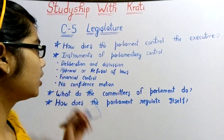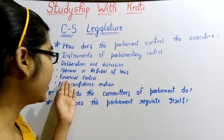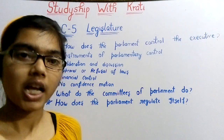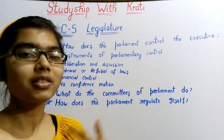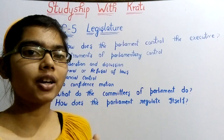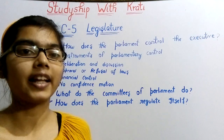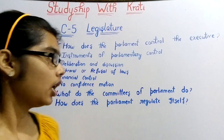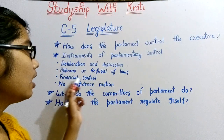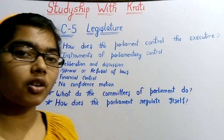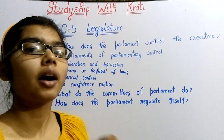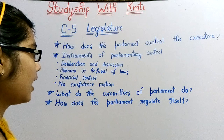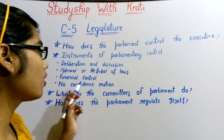The next instrument is financial control. Financial control means that no budget can be passed without Parliament's approval. The next point is the no confidence motion.